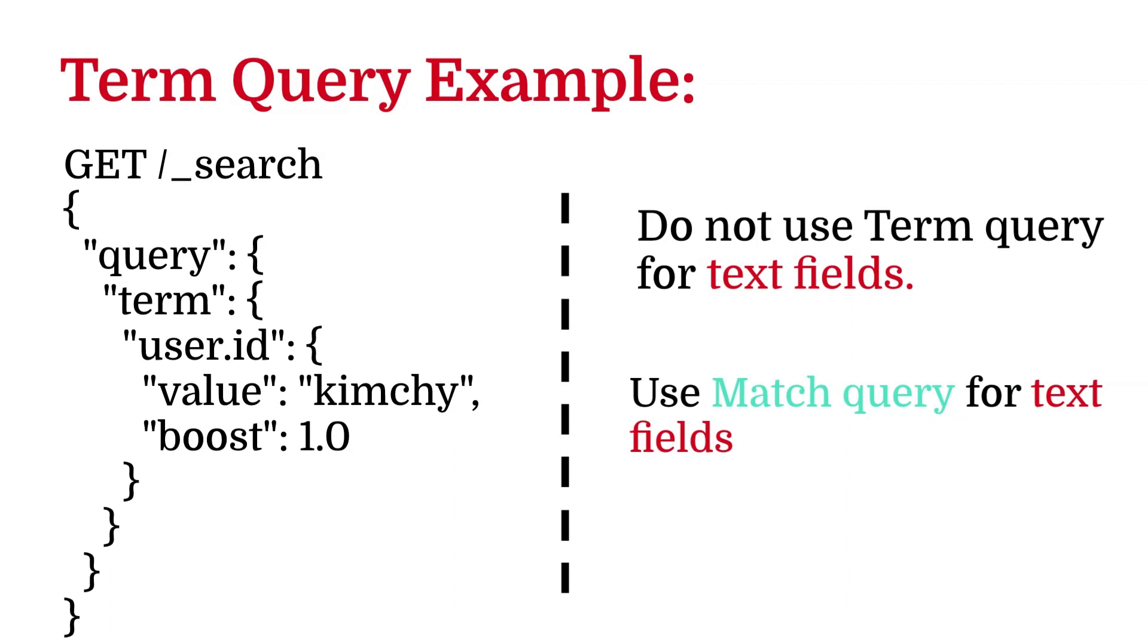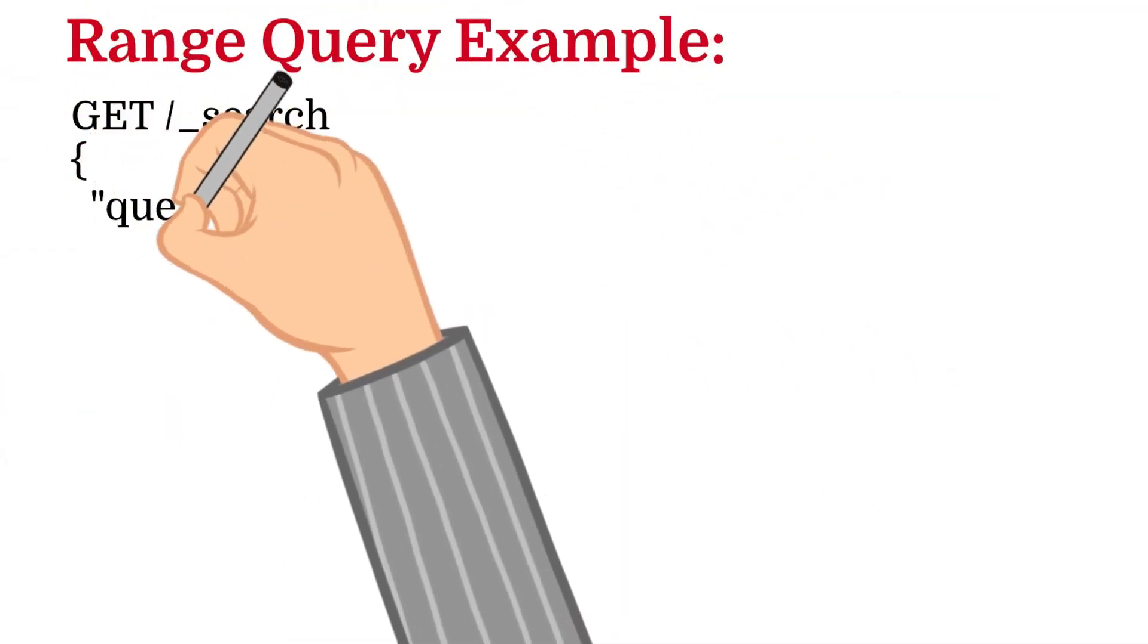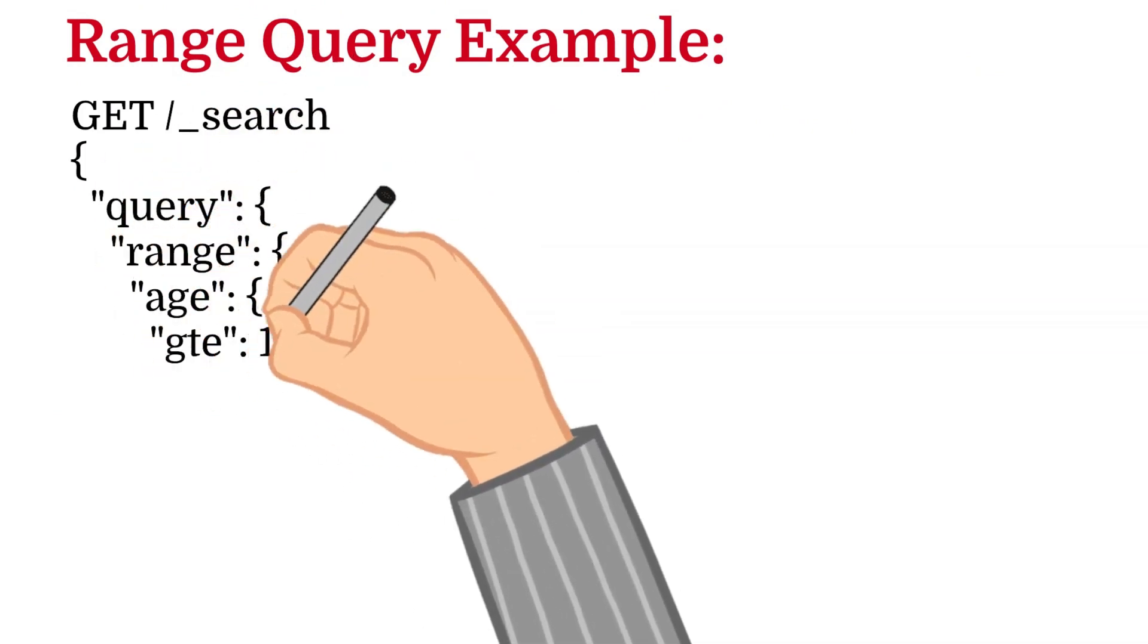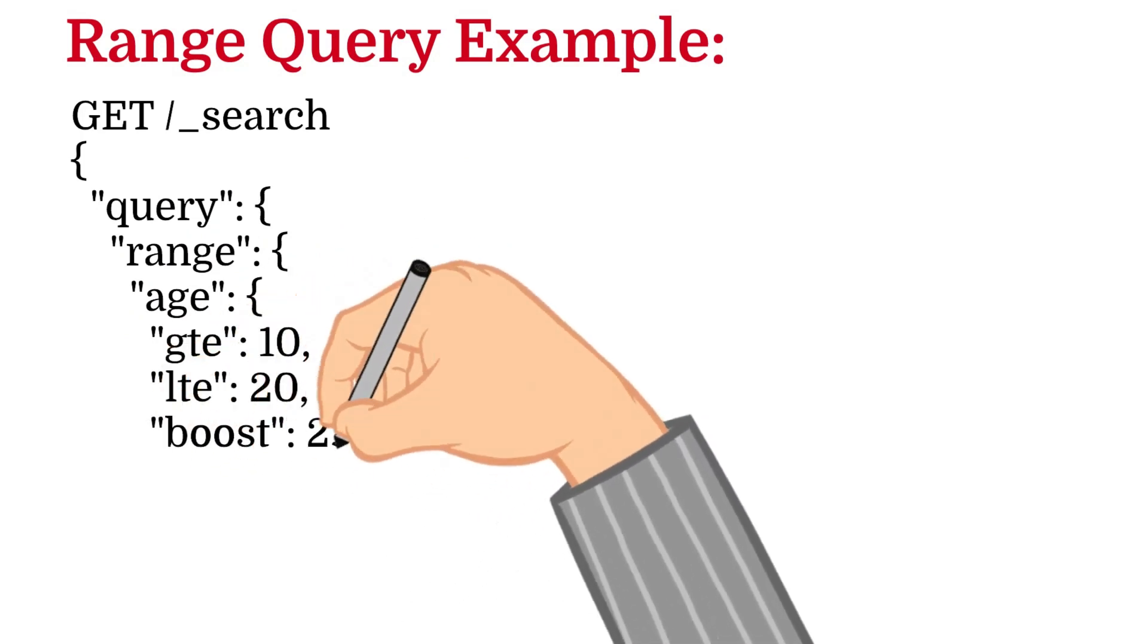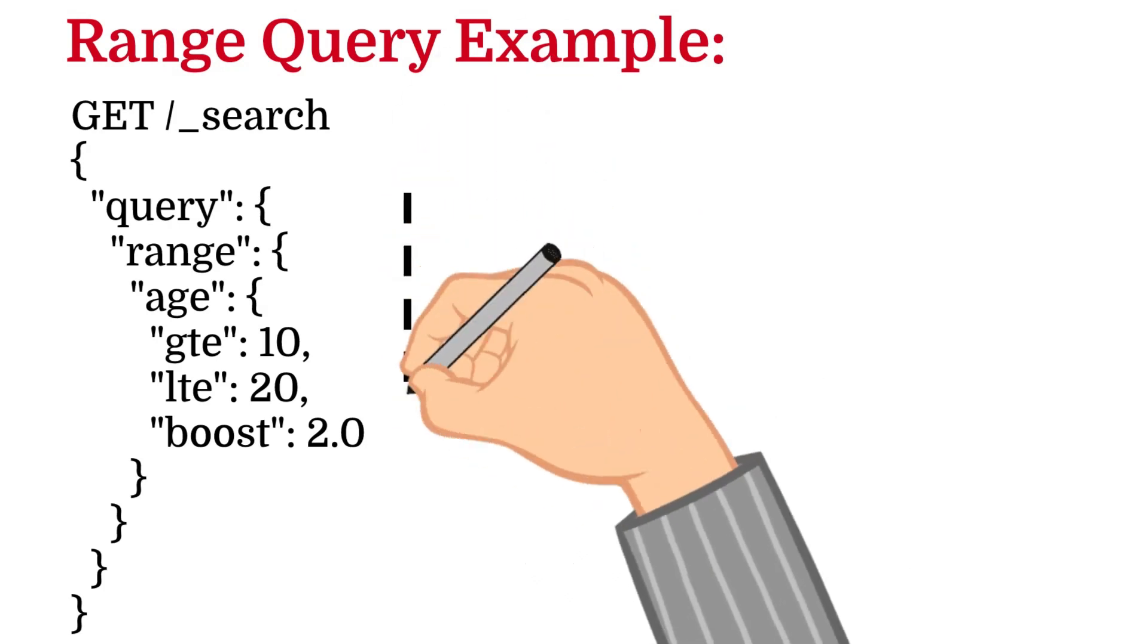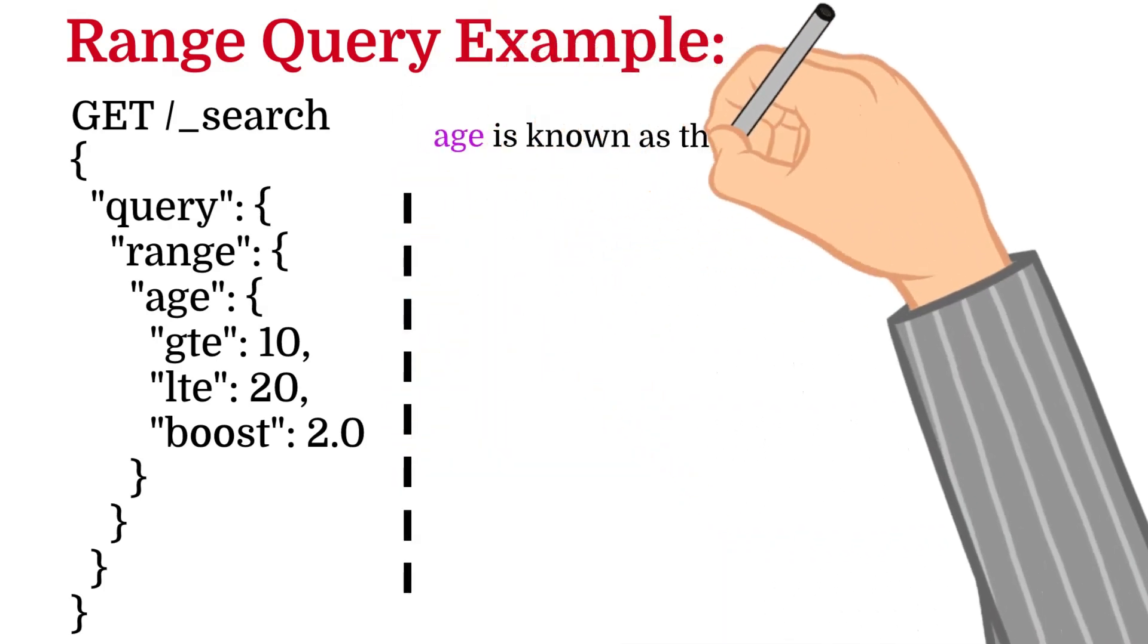The last leaf query that I am going to cover is called a range query. This query returns documents that contain terms within a provided range. Let's see an example. The following search returns documents where the age field contains a term between 10 and 20. In this example, age is known as the field. It has eight parameters and all are optional.